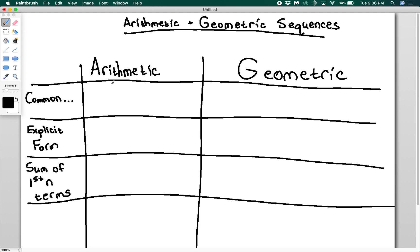An arithmetic sequence is going to be a sequence where the difference between any two terms is always the same. So there's a common difference essentially for an arithmetic series.